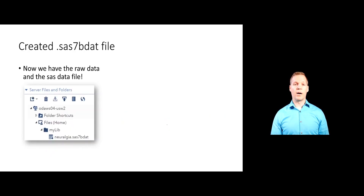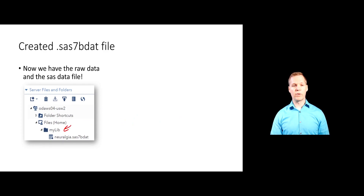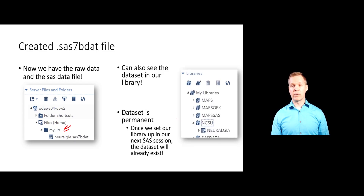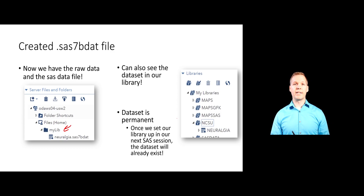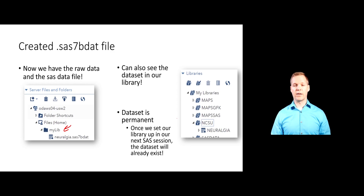We now have created that sas7bdat file. If you go to your mylib folder, where we've associated the NCSU library, you should now see the neuralgia.sas7bdat file. You can also see that dataset in your library section. This is now a permanent dataset — even when you close SAS, it will stay there. You just need to tell SAS at the start of each session where that library is located so it can access those SAS datasets.